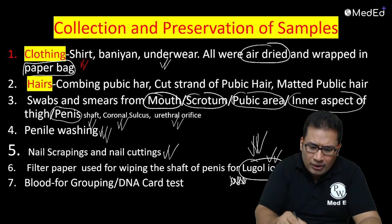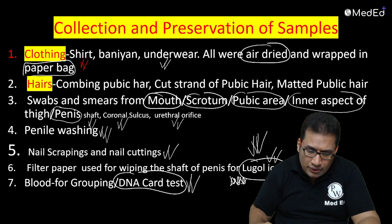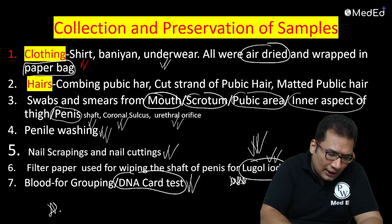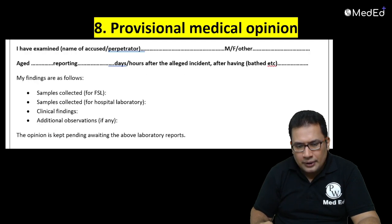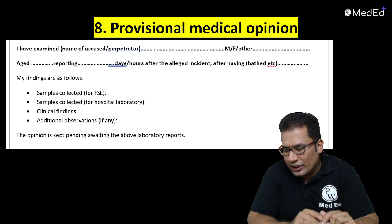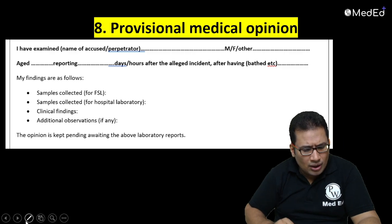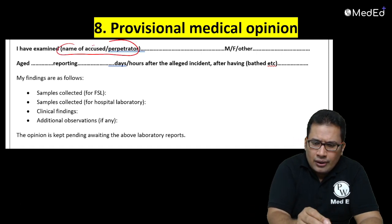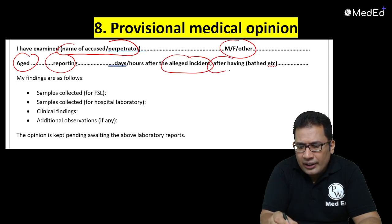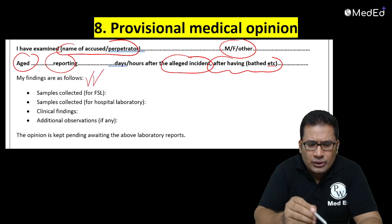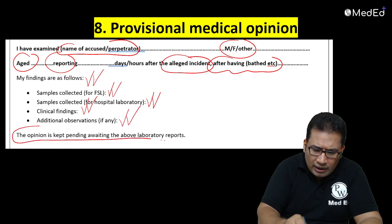Next comes the provisional medical opinion. Write it as: 'I have examined the accused [name], the alleged offender, male/female, aged [X], reporting [dash] days/hours after [the incident], having [bath/no bath]. Findings are as follows.' Write the sample collected for hospital lab, any additional observations, and then clearly state the opinion.